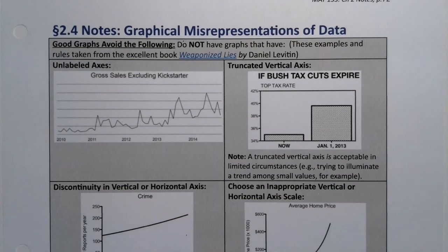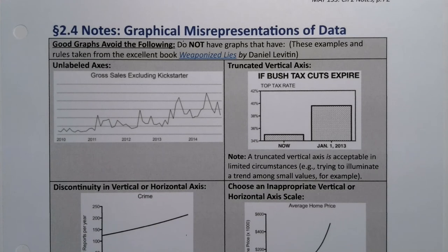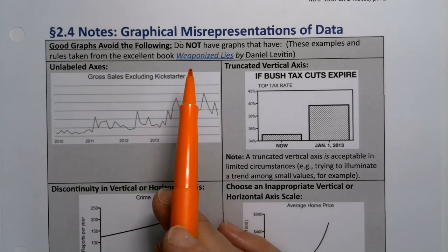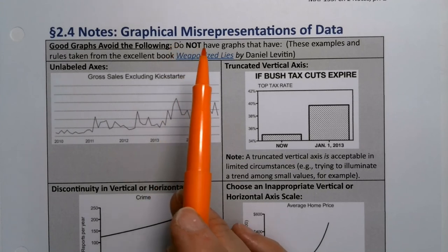Before we leave chapter 2 behind, we've spent so much time looking at appropriate graphs — histograms, dot plots, and so on. But graphs are where the rest of the world kind of impinges on statistics, and they usually do a horrible job. So we want you, as a statistics student, to have a sense of what a bad graph looks like, what the problems are, and why they can be misleading. We're going to spend a brief section looking at the ways graphs can misrepresent data.